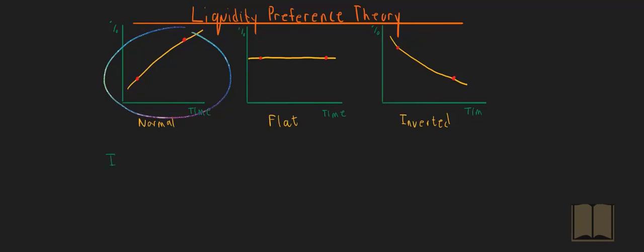The liquidity preference theory says that investors love or prefer liquidity. What does that mean? That means investors love assets that can be turned into cash as soon as possible. Since investors love liquidity, they love assets that are able to be turned into cash as quick as possible.